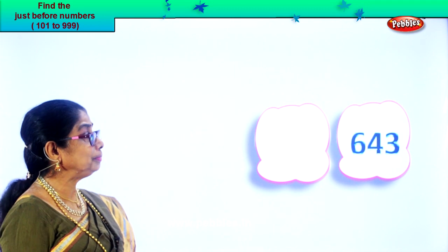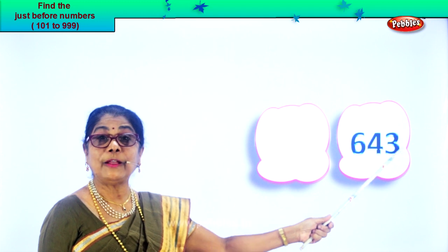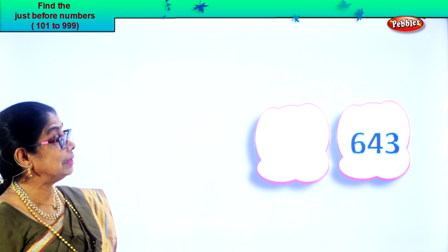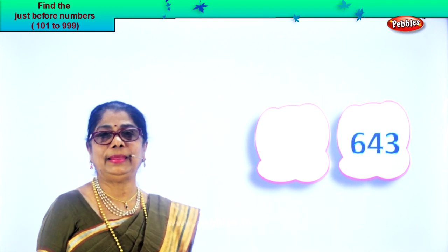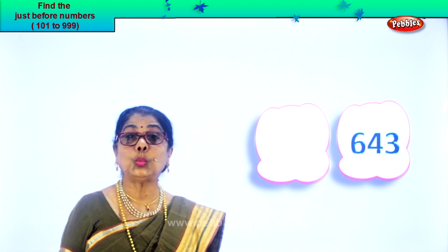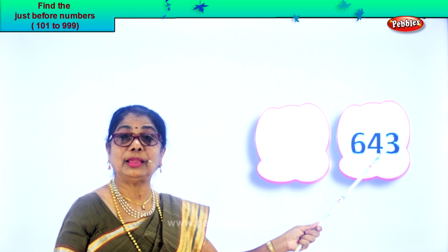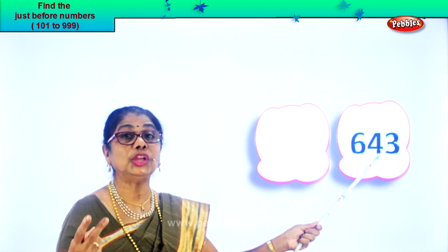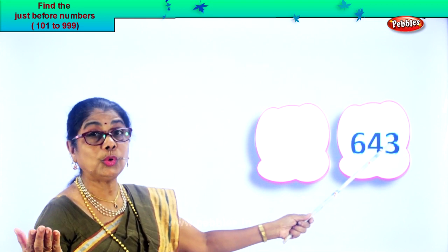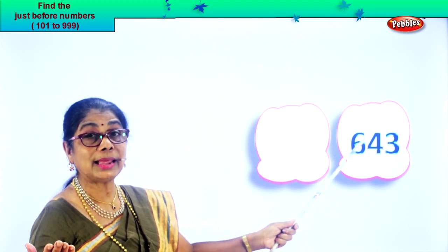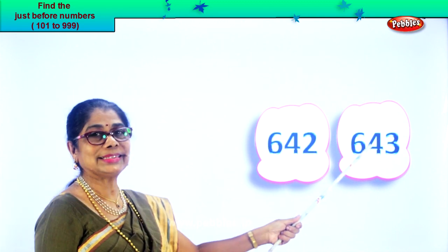Here we are — we have six, four, and three. Three in the ones place, four in the tens, and six in the hundreds place. Read aloud: six hundred and forty-three. We are looking for the number just before that. In the ones place you have three. What is one less than three? Two. That is, forty-three will be forty-two. So what could be the number before? Six hundred and forty-two. That will be six hundred and forty-two, six hundred and forty-three.